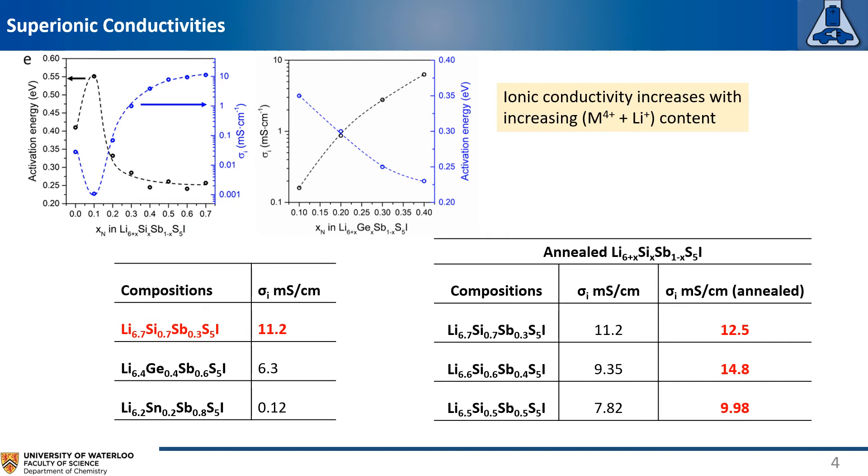Annealing these materials to further improve the purity also leads to higher ionic conductivity. For the silicon 0.6 phase, the ionic conductivity increased from 9.4 mS per centimeter to almost 15 mS per centimeter, which represents one of the materials with highest ionic conductivity to date.